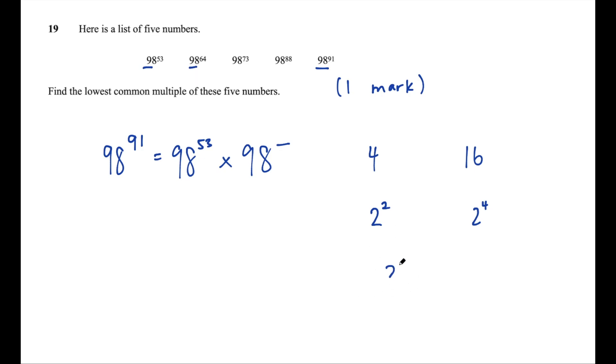This is kind of also connected to index laws because remember if we multiply two numbers with the same base, let's say x to the power of 2 multiplied by x to the power of 3. Remember what you do with those powers? You add those powers. So, x squared times x to the power of 3 is x to the power of 5.